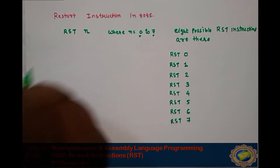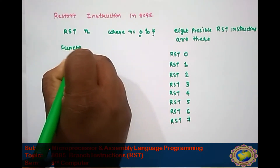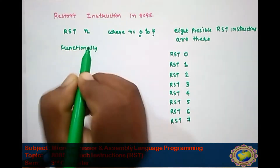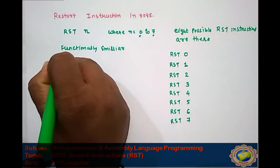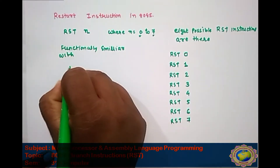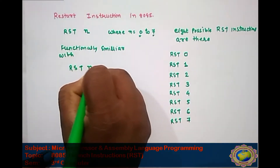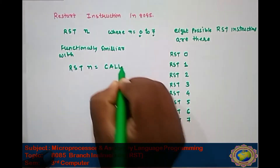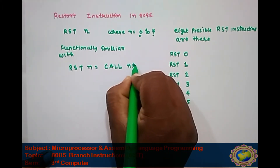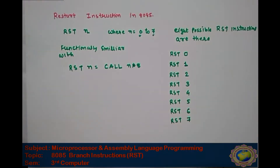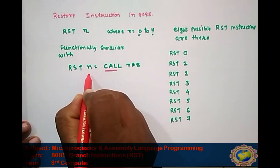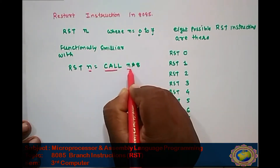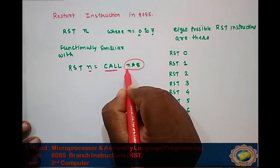RST n is functionally similar to a CALL instruction. RST n is equal to CALL (n multiplied by 8). The value given in n is multiplied by 8.